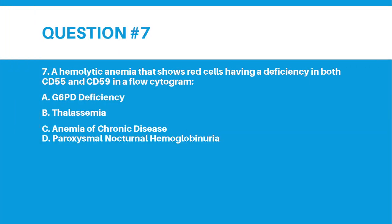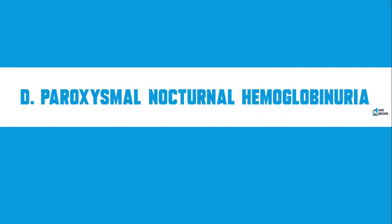Number 7: A hemolytic anemia that shows red cells having a deficiency in both CD55 and CD59 in a flow cytogram. Letter A, G6PD Deficiency. Letter B, Thalassemia. Letter C, Anemia of Chronic Disease. Letter D, Paroxysmal Nocturnal Hemoglobinuria. The correct answer for number 7 is Letter D, Paroxysmal Nocturnal Hemoglobinuria or PNH.